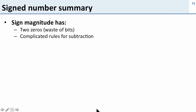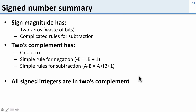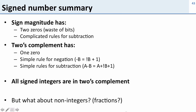Let's look at a summary of the results. Sign magnitude has two zeros which waste bits and has complicated rules for subtraction. 2's complement has only one zero and a simple rule for negation: negative b is just not b plus 1, which gives us a simple rule for subtraction: a minus b is a plus not b plus 1. All the signed integers we're going to talk about in this course are in 2's complement. What we haven't talked about yet are non-integers or fractions, and we'll cover those next when we talk about fixed point numbers and floating point numbers.